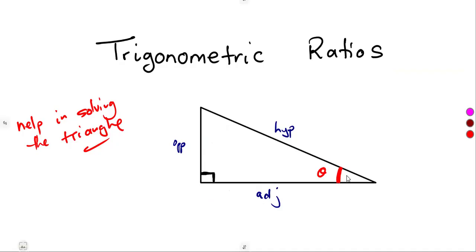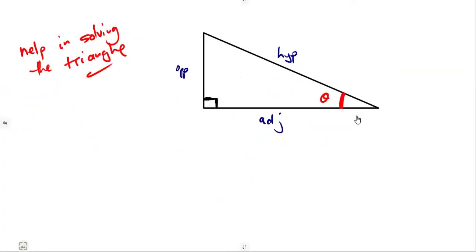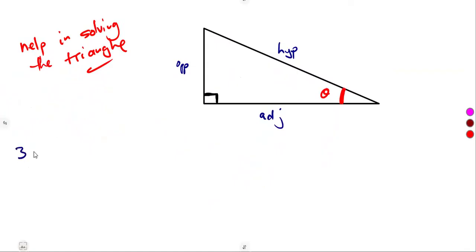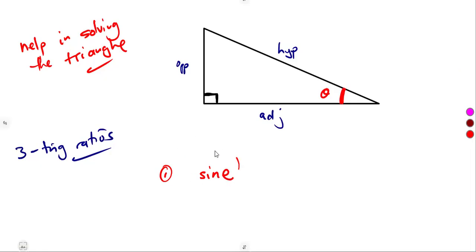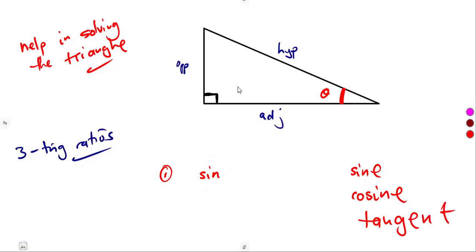According to the angle theta we are given, it is the one that will help us formulate the trigonometrical ratios. There are actually three trig ratios in our syllabus that we are going to consider: the first one is the sine — written in short as sin — then we have the cosine, and we also have the tangent. These can be written in short as sin, cos, and tan.